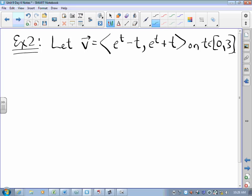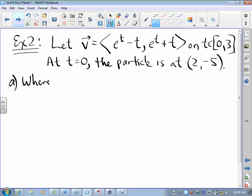So, at time equals 0, the particle is at 2, negative 5. I want to know, where is the particle at time equals 3?